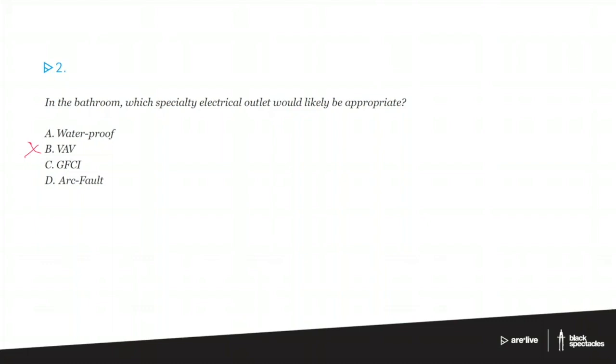The difference between the ground fault interrupt and the ground fault circuit interrupt is that the GFI is just located in that outlet so it's just there in that one box. The circuit interrupt means the entire circuit that that's on is on the ground fault circuit interrupt.